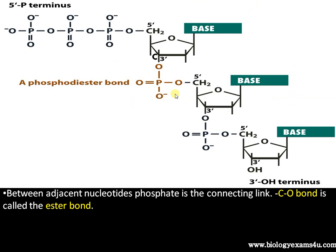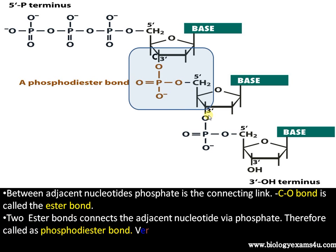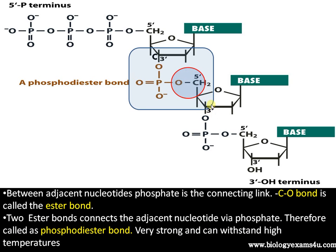Adjacent nucleotides are linked by a phosphate group. The C-O bond is called an ester bond, and this phosphate group connects the two nucleotides. Two ester bonds connect the adjacent nucleotides through phosphate — the first ester bond is at the 5' end of the first nucleotide, and the second ester bond is at the 3' end of the second nucleotide. That's why this is called a diester — two ester bonds connected through phosphate — and that is why this bond is called a phosphodiester bond. This bond is very strong and can withstand high temperatures.